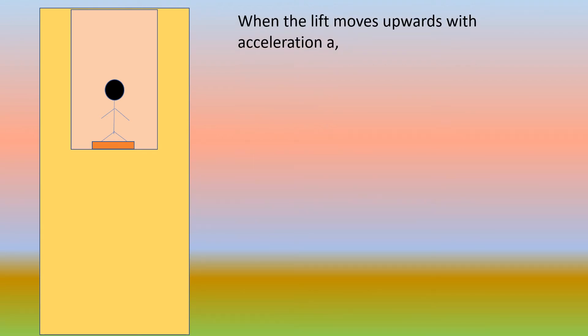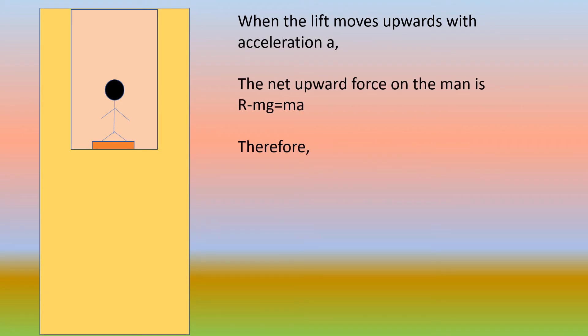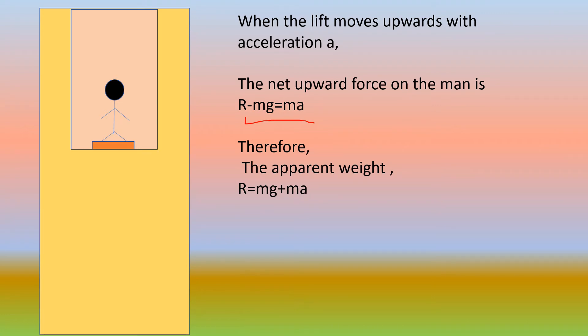Now let us see what happens to weight when we move upwards with an acceleration in an elevator. When the lift moves upwards with an acceleration A, the net upward force on the man is R minus Mg equal to MA. Therefore, the apparent weight will be R equal to Mg plus MA.